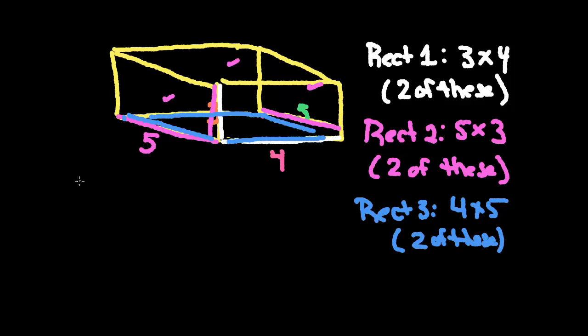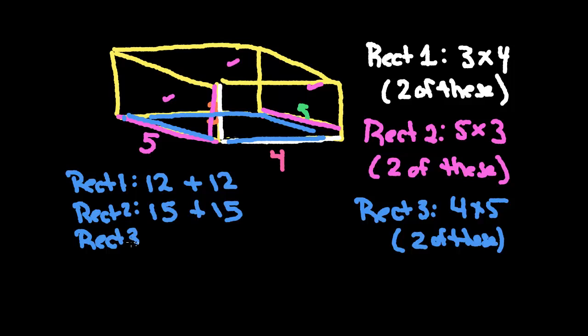So I can say, rectangle 1 is 3 times 4, which is 12, but there's two of them. So I'm going to say 12 plus 12. Rectangle 2 is a 5 by 3, that's 15, but there's two of them, so it's 15 plus 15. And rectangle 3 is a 4 by 5, which is 20, so it's going to be 20 plus 20, because there's two of them. Now before I'm done, I make sure that I have six sides. 1, 2, 3, 4, 5, 6. So that I perhaps didn't just find my first set and forget that each had a match.